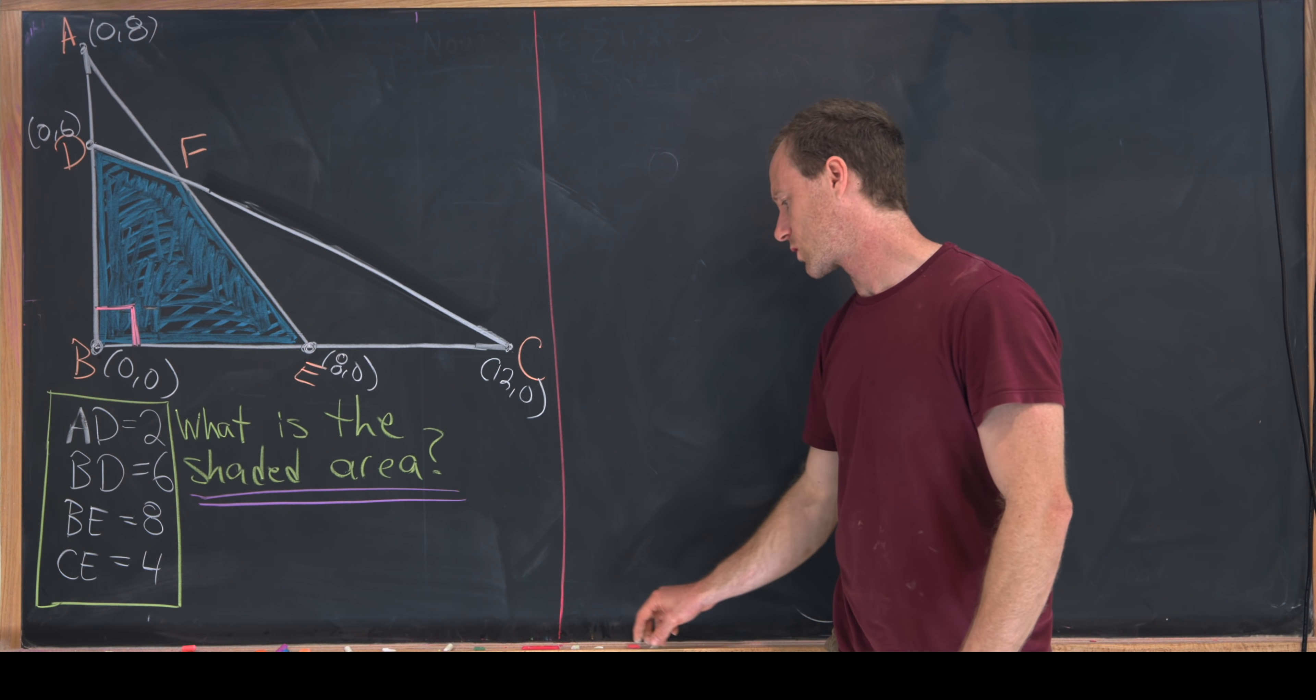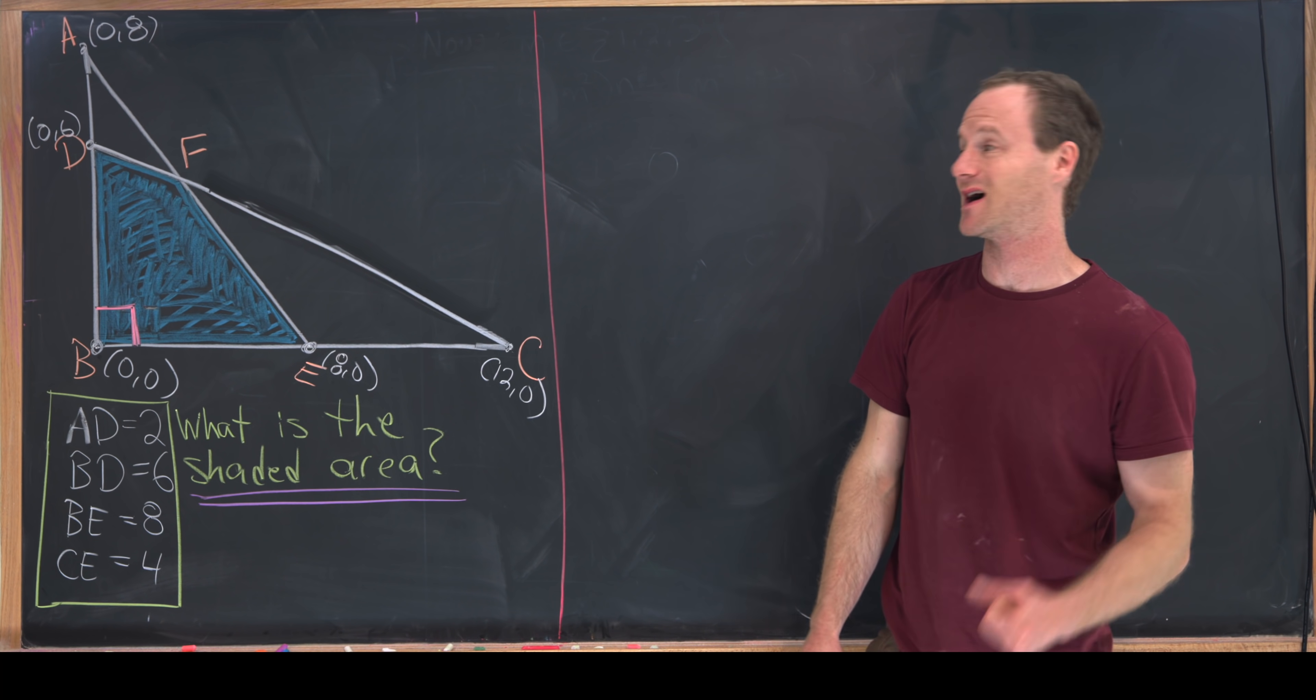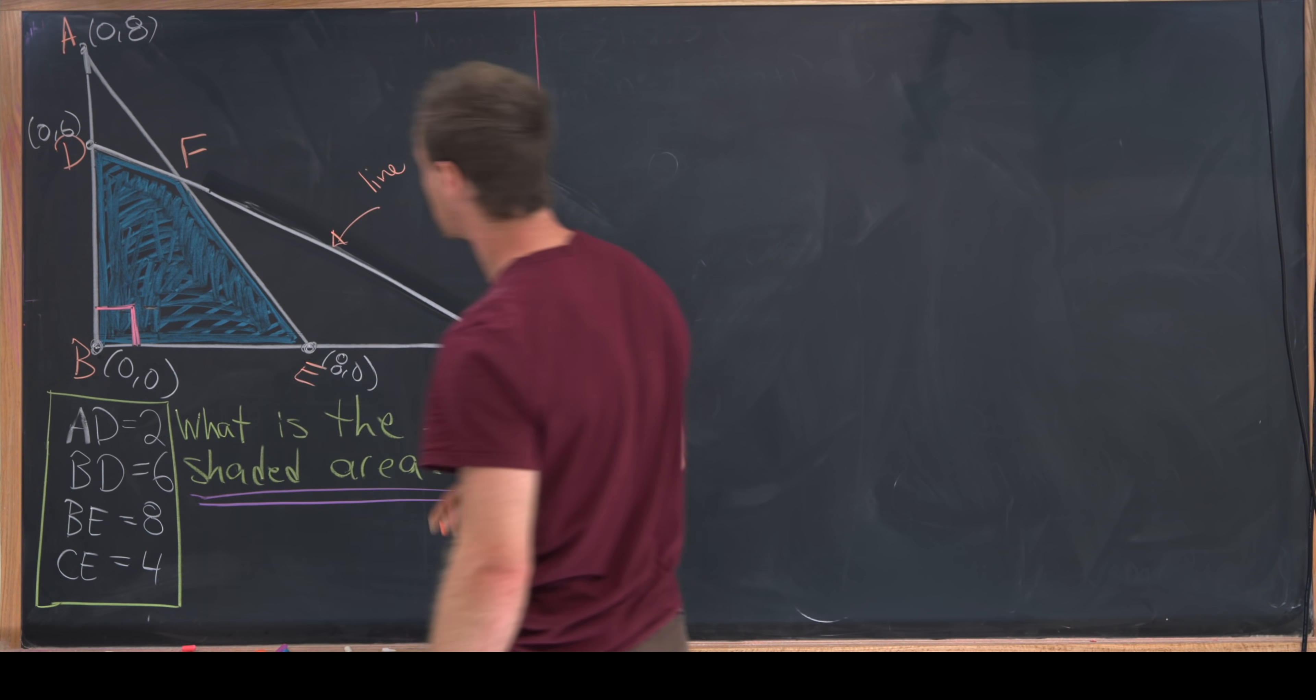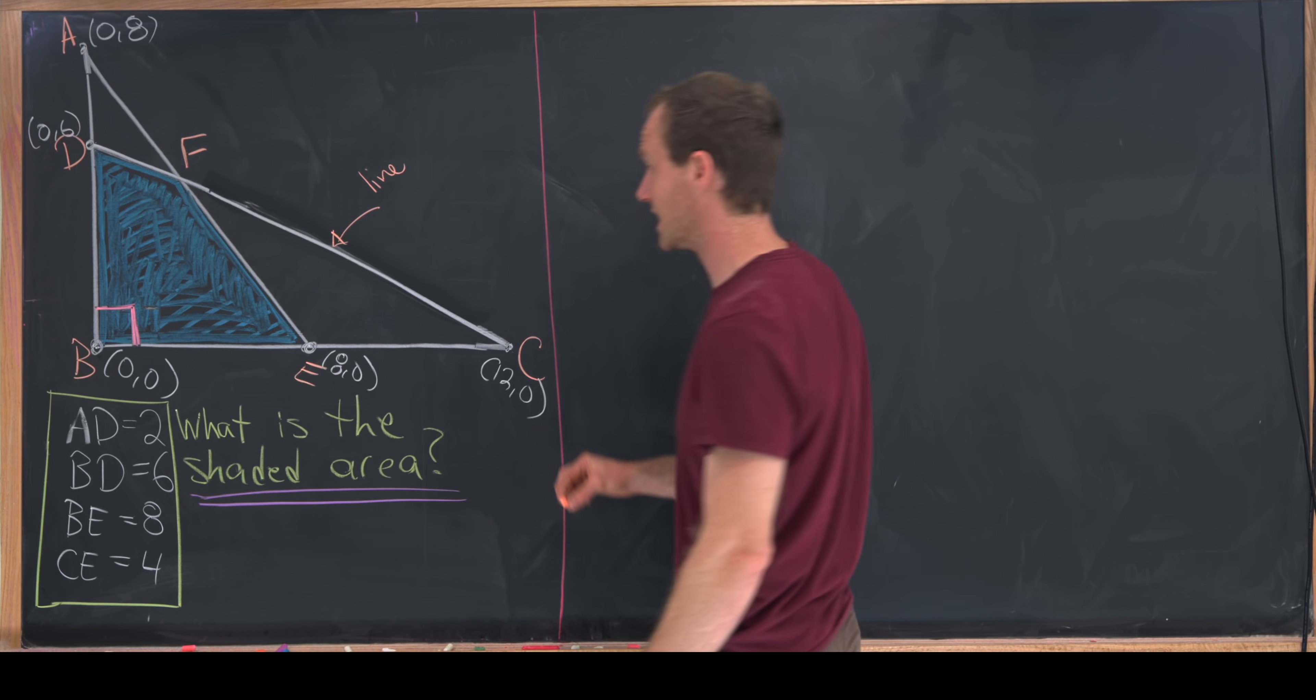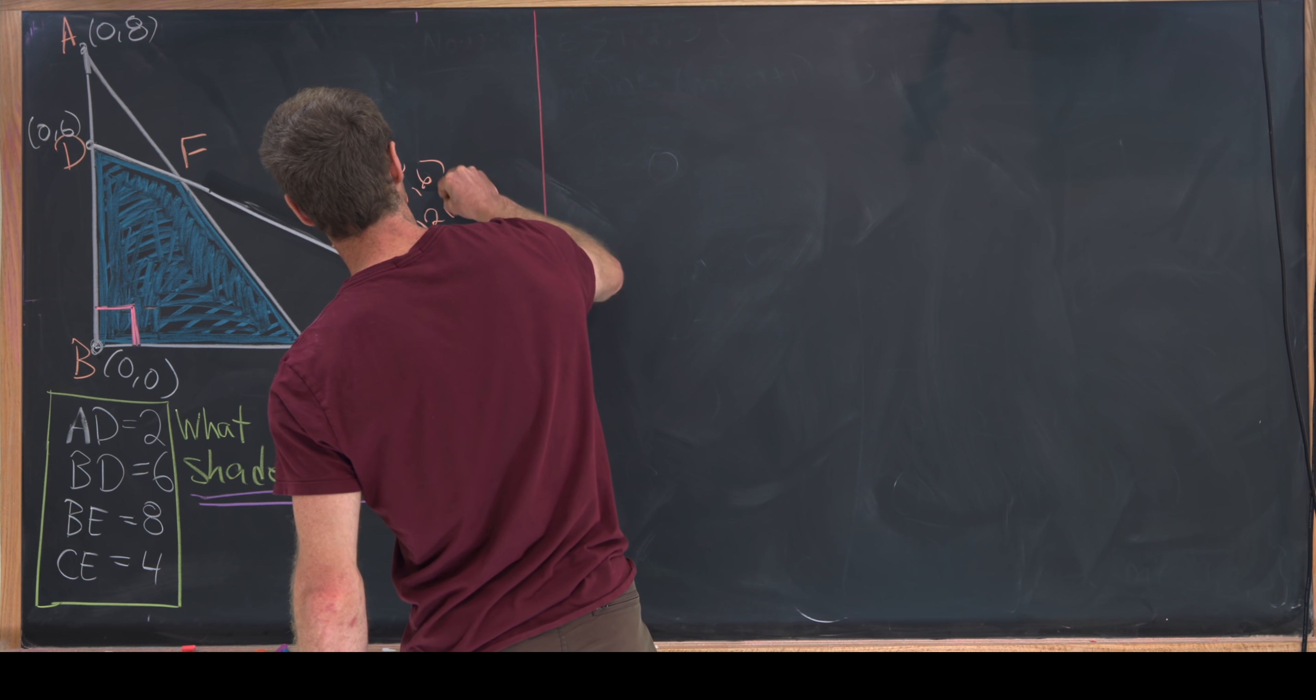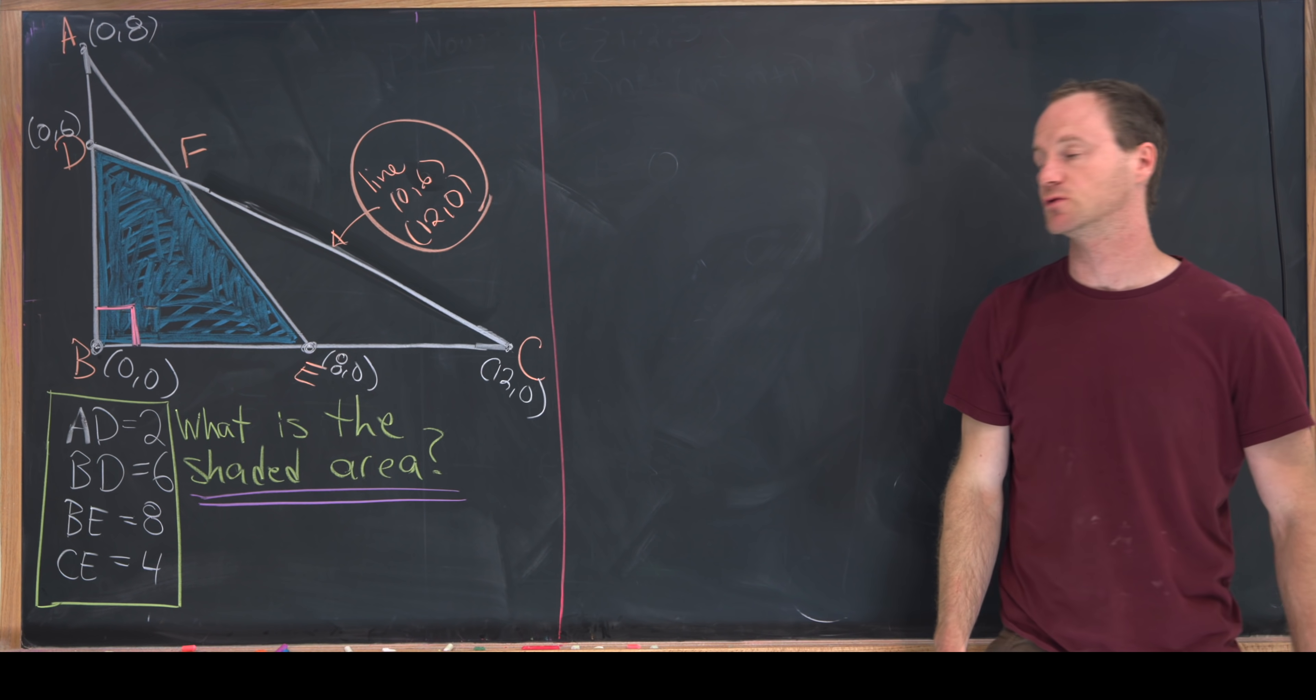Next up we're going to view the hypotenuses of these triangles as lines. Notice that this guy right here is going to be a line containing the points (0, 6) and the point (12, 0).